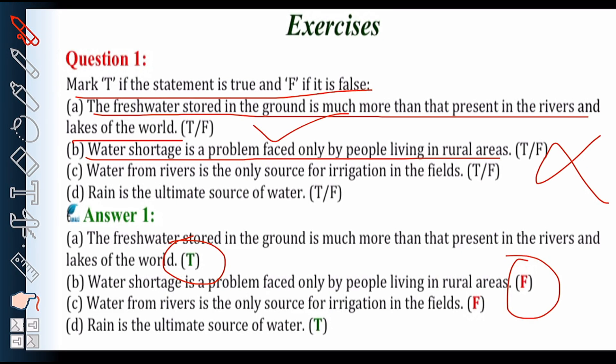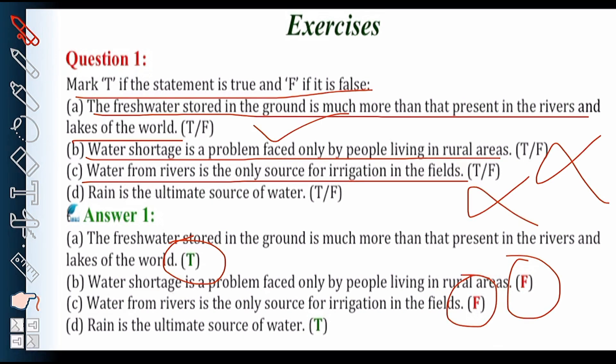Part C: water from rivers is the only source for irrigation in the field. The given statement is false because rain water can also be used as a source for irrigation.